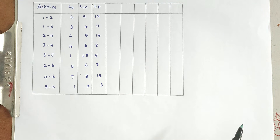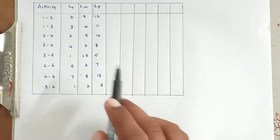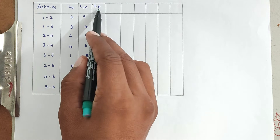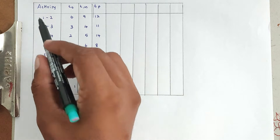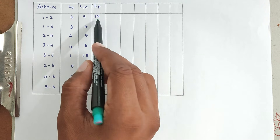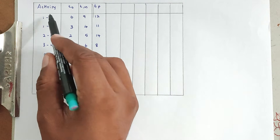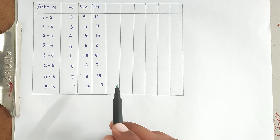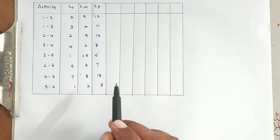Hello friends, welcome to Civil Engineering Exam. Today we are going to see a problem related to construction project management on the topic of PERT — Program Evaluation and Review Technique. The problem gives activity optimistic time (TO), most likely time (TM), and pessimistic time (TP). We have to find the critical path, then EST, EFT, LST, and LFT — that is early start time, early finish time, latest start time, and latest finish time.